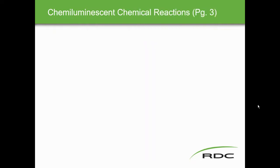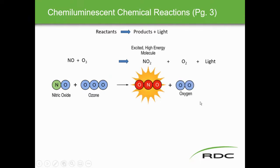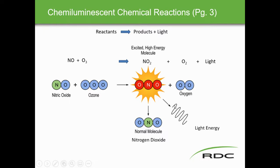In chemiluminescence, reactants produce products plus light. In this case, nitric oxide (NO) and ozone (O3) react to produce nitrogen dioxide (NO2) plus oxygen, and emit light energy. The amount of light energy is proportional to the amount of nitrogen dioxide in the sample — that's the key reaction this analyzer measures.